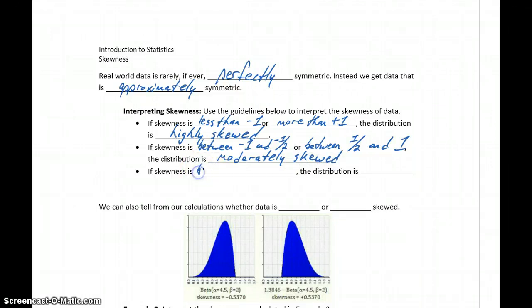And if our skewness is between negative one-half and positive one-half, then the distribution is approximately symmetric. So again, we'll probably never get that value of zero, but we'll get numbers that are close to it. So anything between negative one-half and one-half, we can consider to be symmetric.